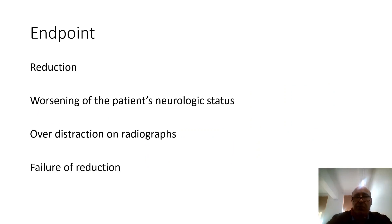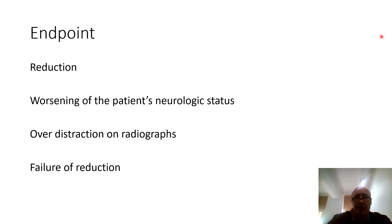Endpoints of cervical traction reduction are: successful reduction; very occasionally, worsening neurological status — though the incidence of making a patient permanently worse is less than 1%, established over 1,600 consecutive cases. If you see over-distraction on x-rays, there may have been catastrophic ligament disruption from the injury, and that may be an indication to stop. If you reach your target weight of 35–40 kg and still haven't achieved reduction, that's an endpoint — sometimes a fractured facet may prevent reduction.